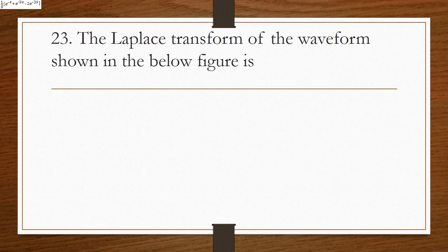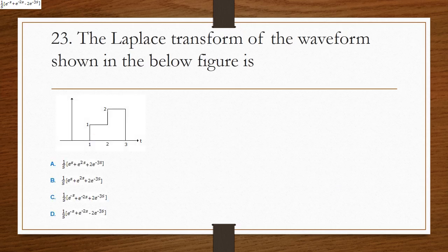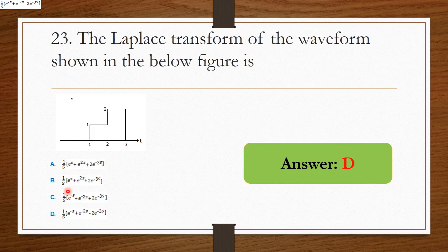The Laplace transform of the waveform shown in the figure — using the Laplace transform formula and applying the limits, the answer is option B: (1/s)(e^(−s) + e^(−2s) − 2·e^(−3s)).